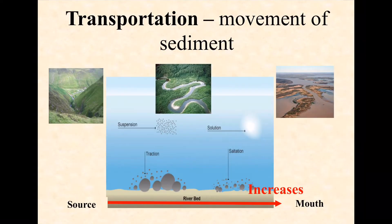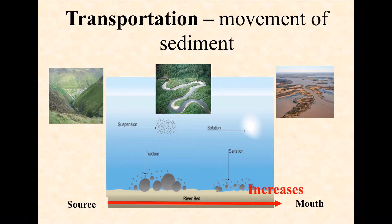If we think about transportation — the movement of sediment — in the upper course, because of V-shaped valleys and huge boulders, the river has very little energy to move anything, so not much transportation happens. In the middle course, there is some movement within meanders and oxbow lakes of sand, sediment, and pebbles. But transportation happens a lot in the lower course to create deltas and estuaries. So from source to mouth, transportation increases.